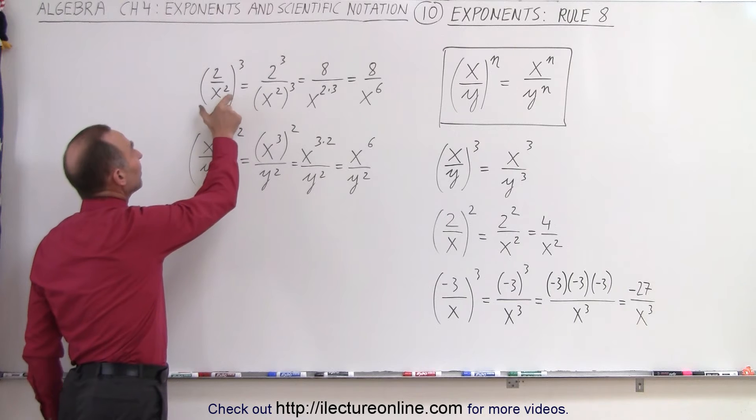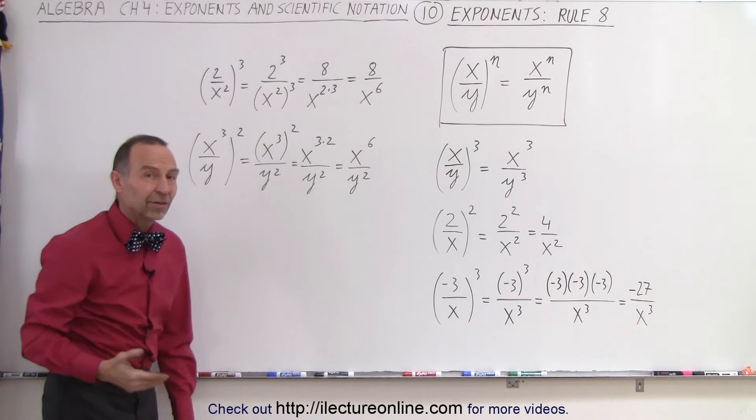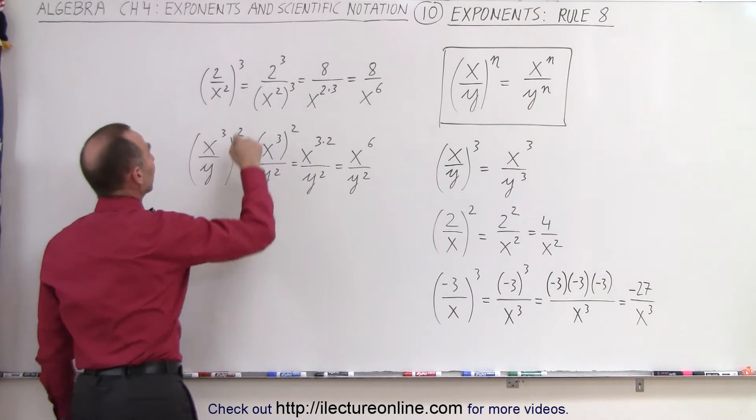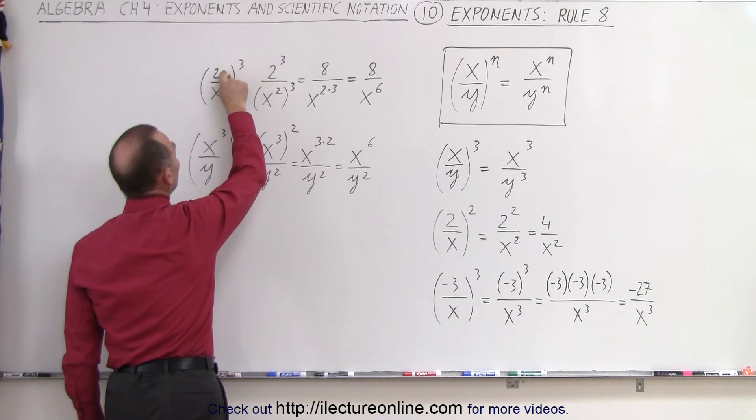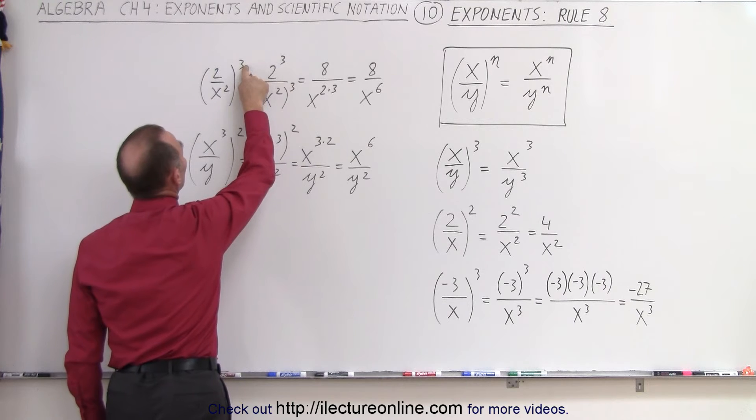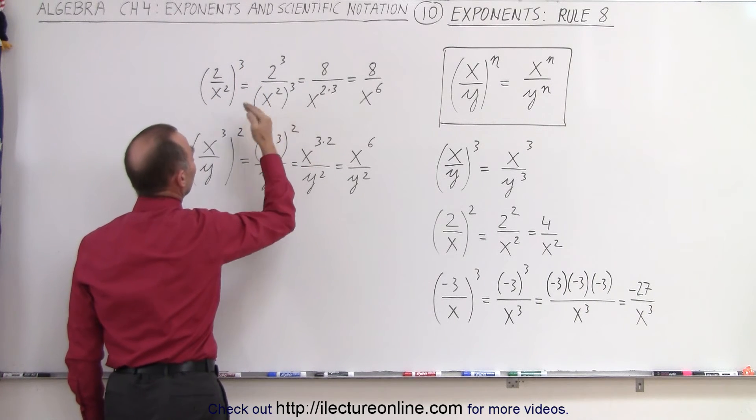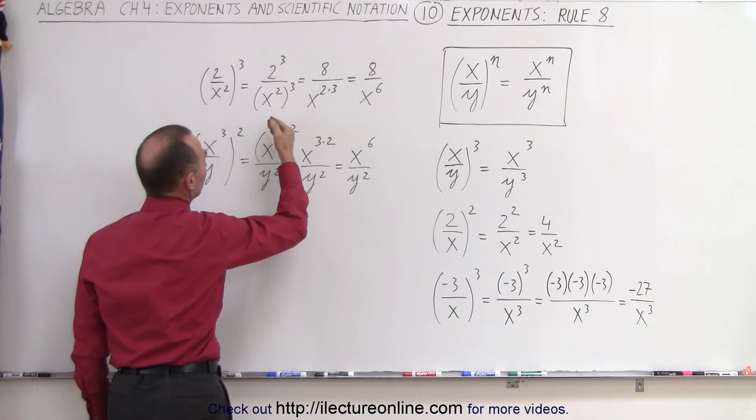What if we have an exponent inside the parentheses? In this case, x is squared in the denominator. Then we realize that the cube here applies to the numerator, so this becomes 2 cubed, and the cube applies to the denominator. So this is x squared cubed, or x squared times x squared times x squared, which is x to the sixth.